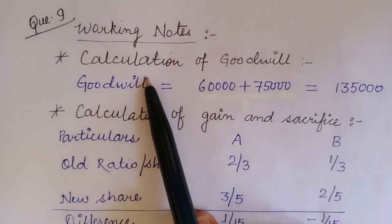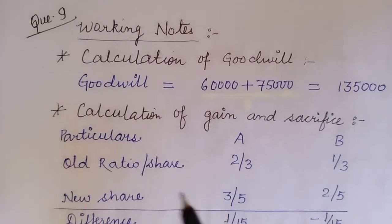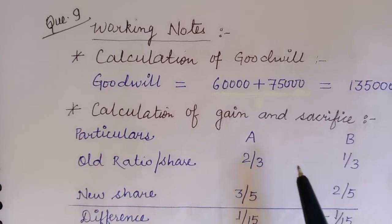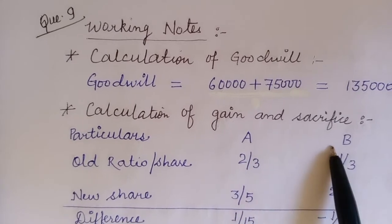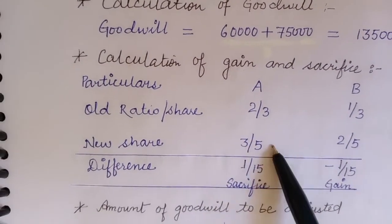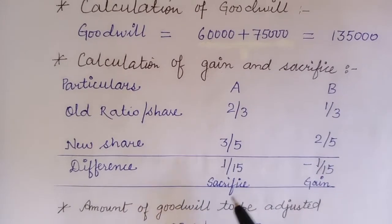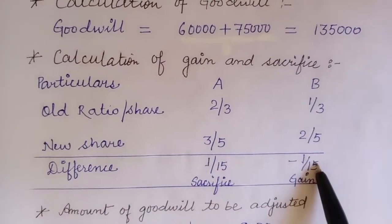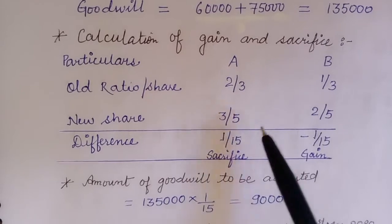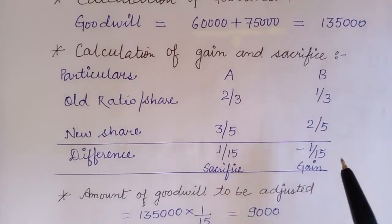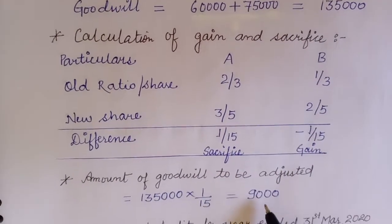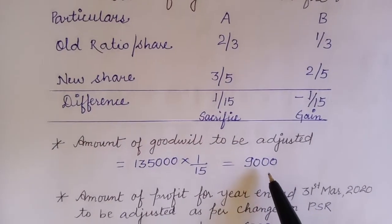For calculation of gain or sacrifice: old shares are 2/3 and 1/3; new shares are 3/5 and 2/5. The difference comes out to 1/15 and −1/15, which shows the gain and sacrifice respectively. This total goodwill figure is to be adjusted according to this gain or sacrifice, so 1/15 of ₹9,000 is to be adjusted.